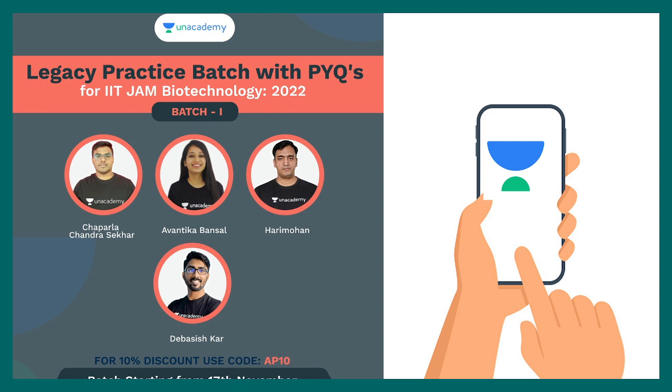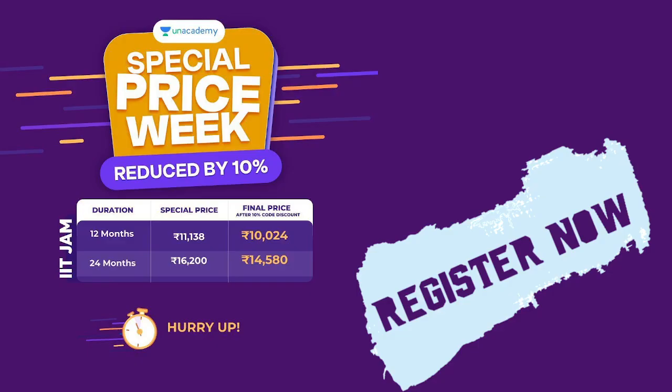You can use my code AP10 to get a 10% discount. All the links are provided in the description. Check out them. And the prices are all-time low right now because 12-month subscription is only 10,000 rupees and 24-month subscription is kind of 14,000 rupees.